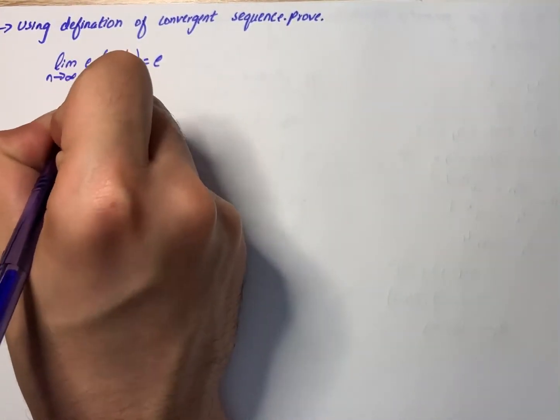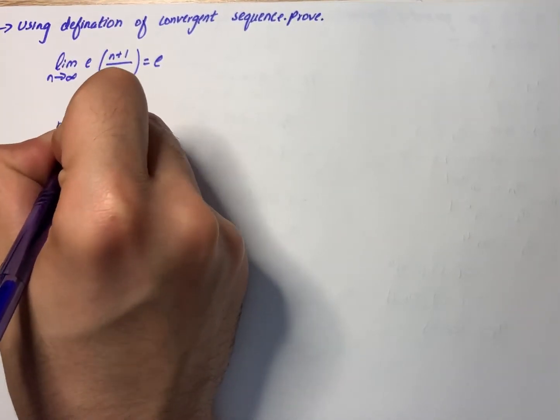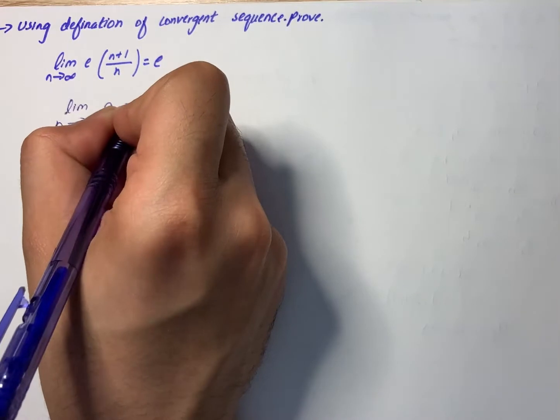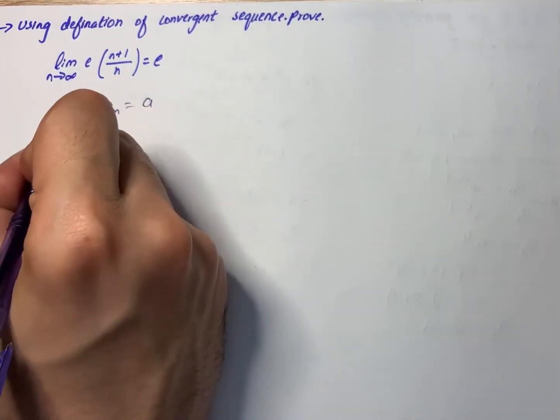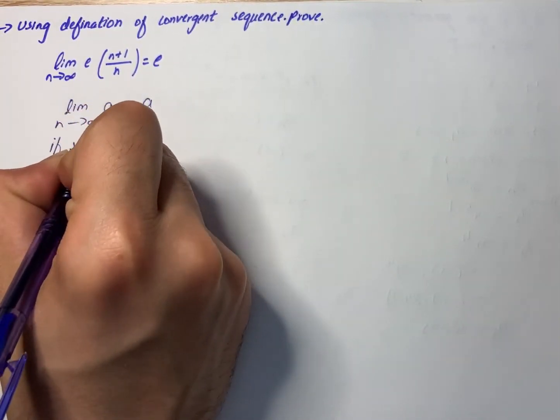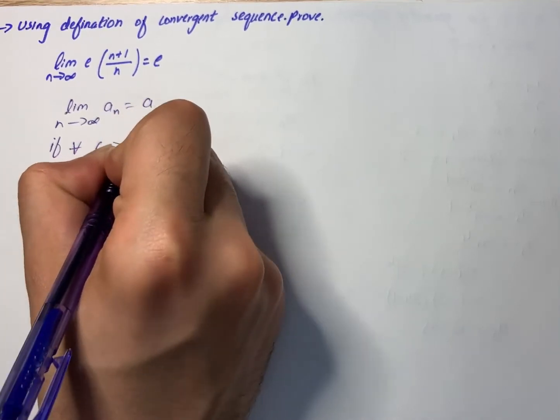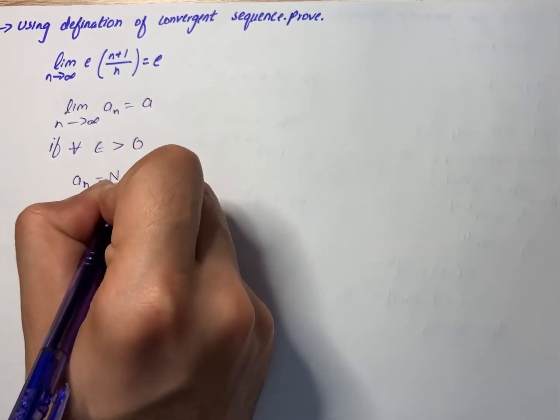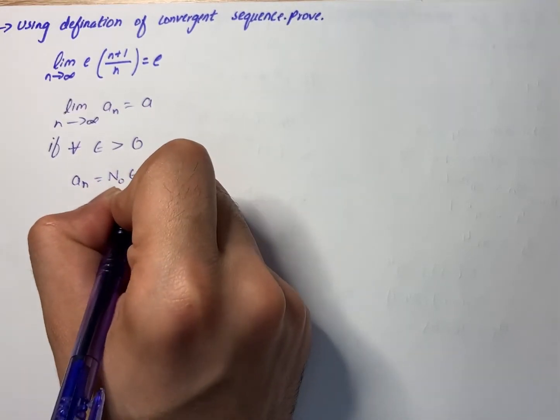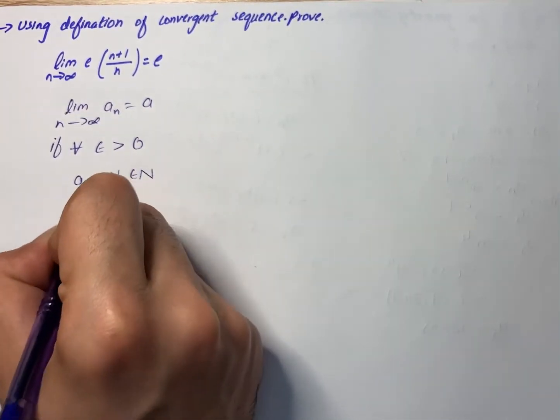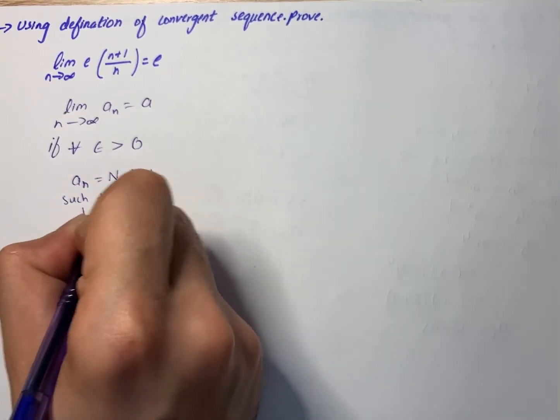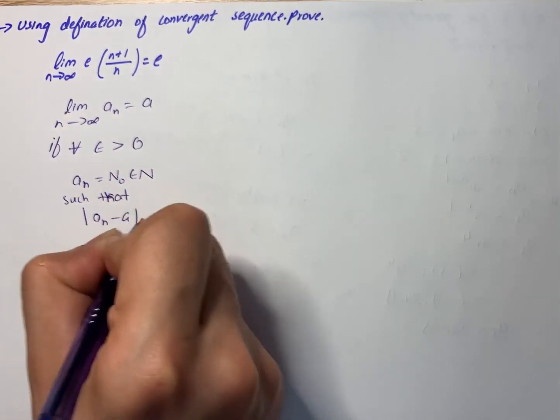Write it as limit n approaching infinity a_n equals a. A sequence is convergent if for all epsilon greater than 0 there exists n_0 in N such that |a_n - a| is...